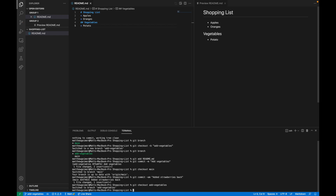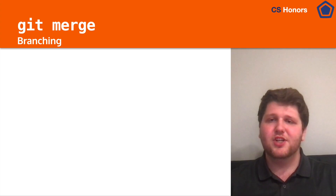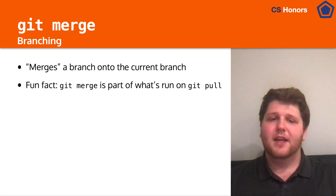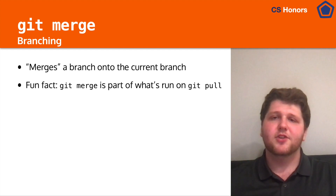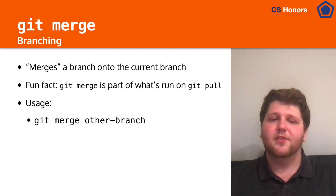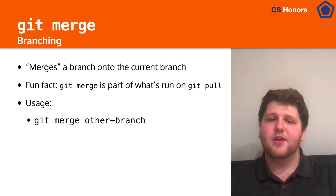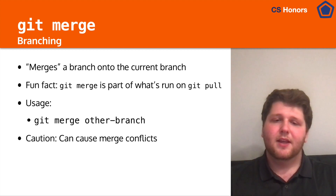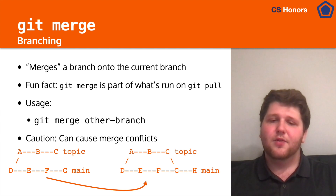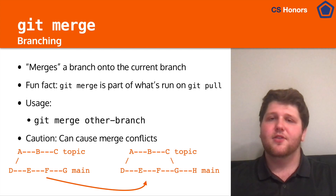To find out how to merge two branches together, let's go back to the slides. The opposite of branching is merging. Merging will take one branch and merge it into another, taking all those commits and combining them. Fun fact: git merge is actually run under the hood when you run git pull — so that's why you might get a merge conflict if you try to pull something and happen to have modified the same lines. To use git merge, all you have to do is run git merge and then specify the other branch you want to merge from. Be aware that you can cause merge conflicts when you do this. When we run git merge topic from our main branch, it's going to take all the commits from topic and join them together in a new merge commit.